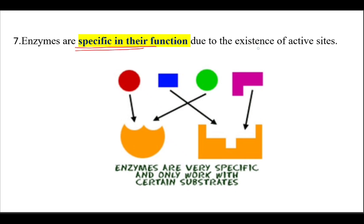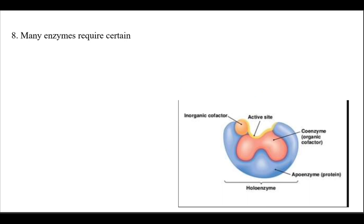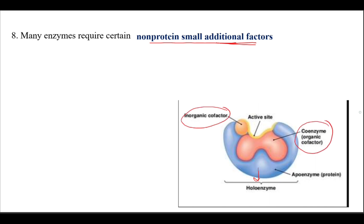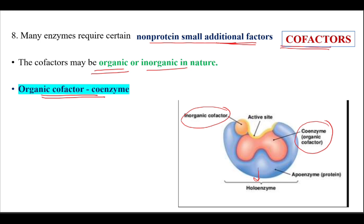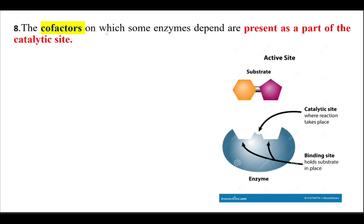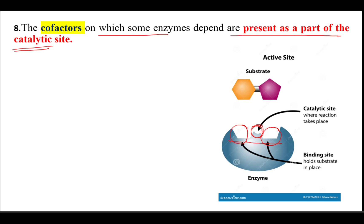Enzymes are specific in their action because of the existence of the active site. Many enzymes also require certain non-protein small additional factors — even though enzymes are protein in nature, they require some non-proteinaceous substances for their effective action. These are called co-factors. Co-factors may be organic or inorganic in nature, and organic co-factors are called co-enzymes. The co-factors on which some enzymes depend are present as part of the catalytic site.